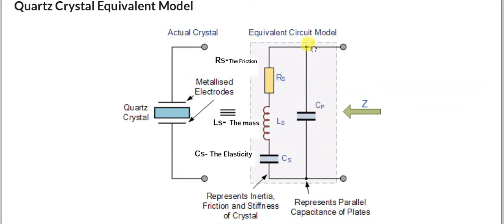The parallel plate capacitance Cp represents the capacitance of the two metallic plates, which is easy to calculate from the dimensions of the metallic plates. Inside the crystal, the remaining parameters — Rs, Ls, and Cs — are connected in series. Cs is the series capacitance, Ls is the series inductance, and Rs is the series resistance. Rs represents the friction of the crystal; Ls represents the mass of the crystal; and Cs represents the elasticity of the crystal — the elastic restoring force F = -kx produced by the squeezing and stress-strain behavior.